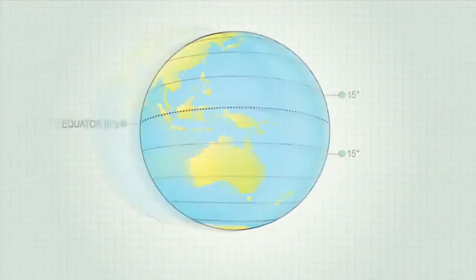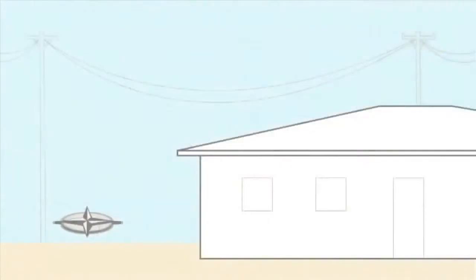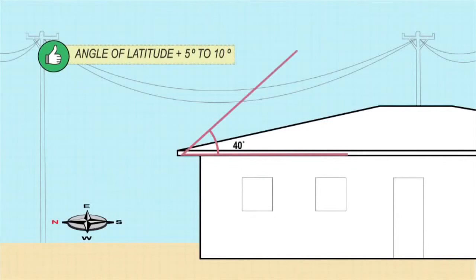The ideal inclination is the angle of latitude plus 5 to 10 degrees. Sydney's latitude is 33.5 degrees, so an ideal angle of inclination would be around 40. However, plus or minus 15 degrees would still provide adequate performance.